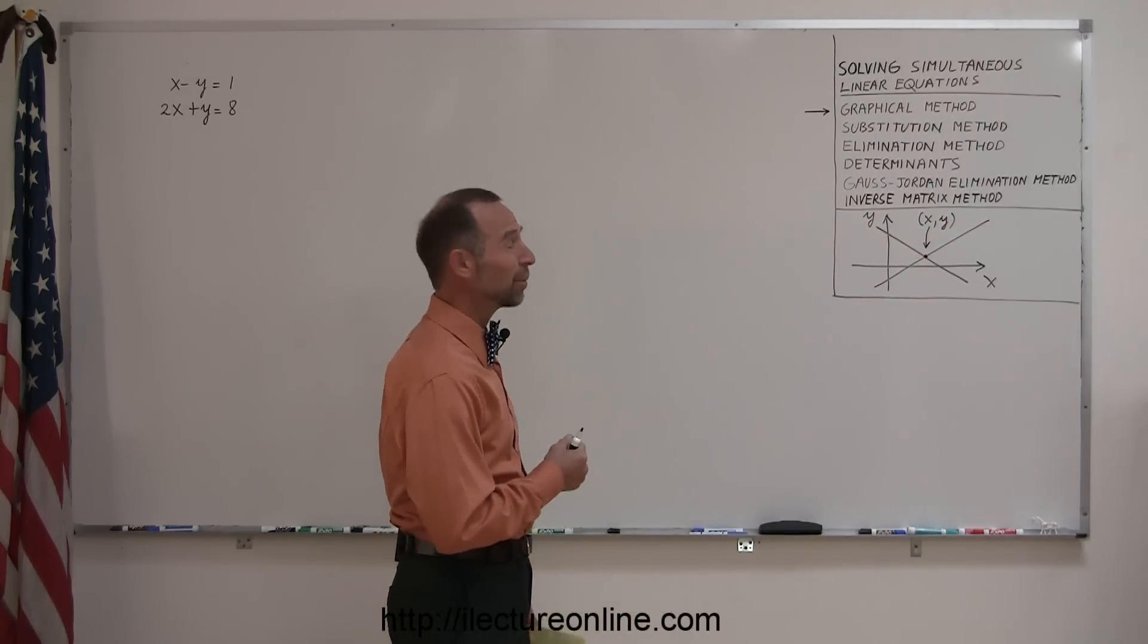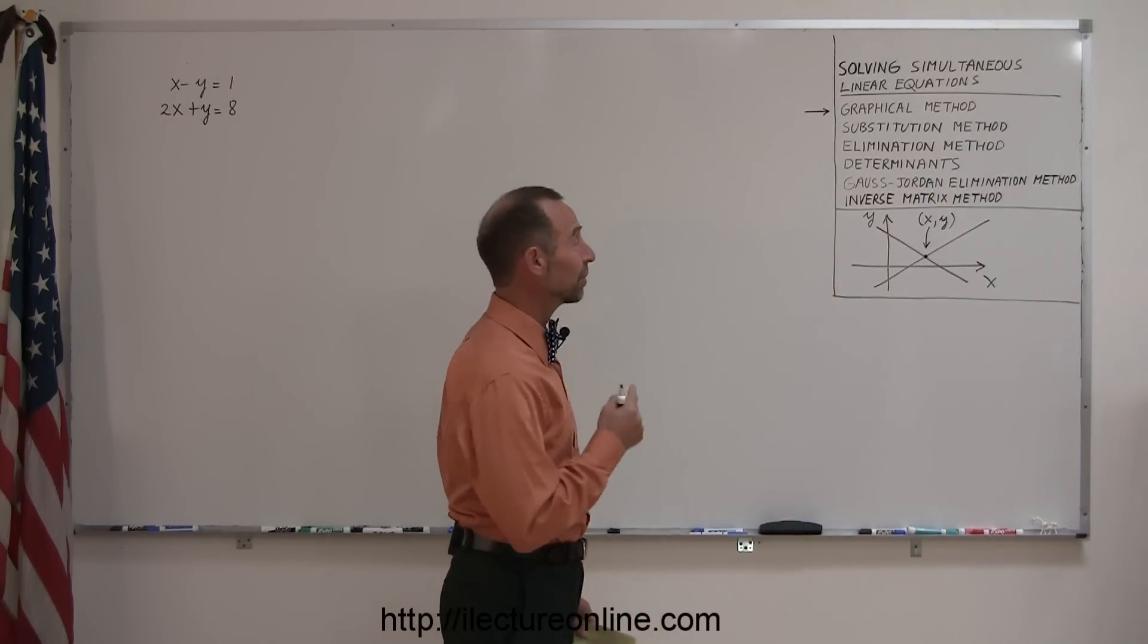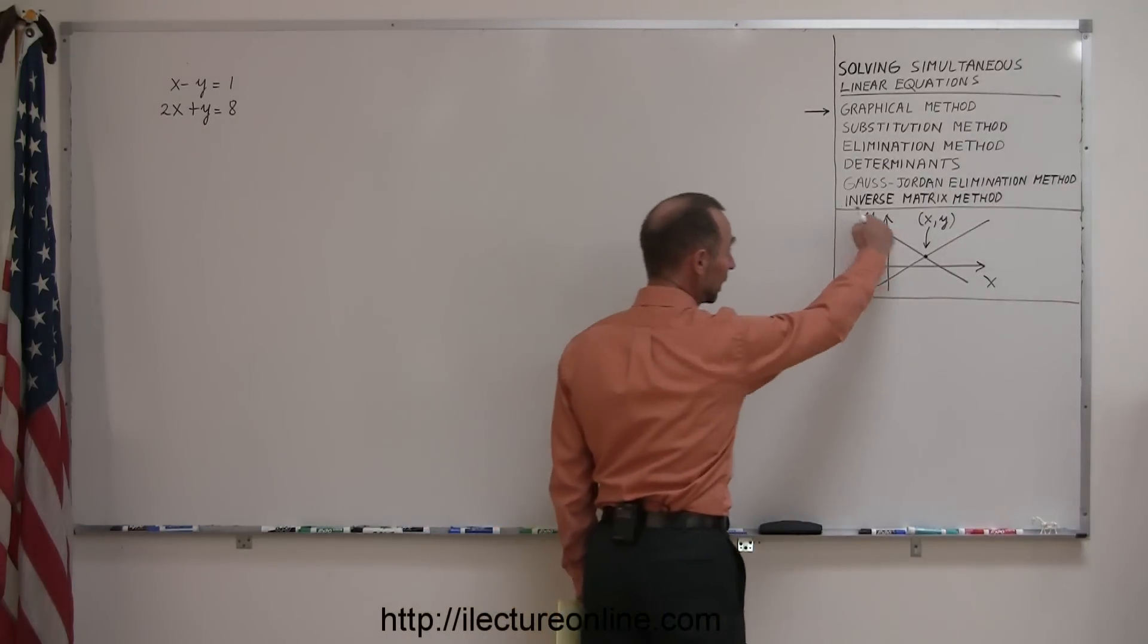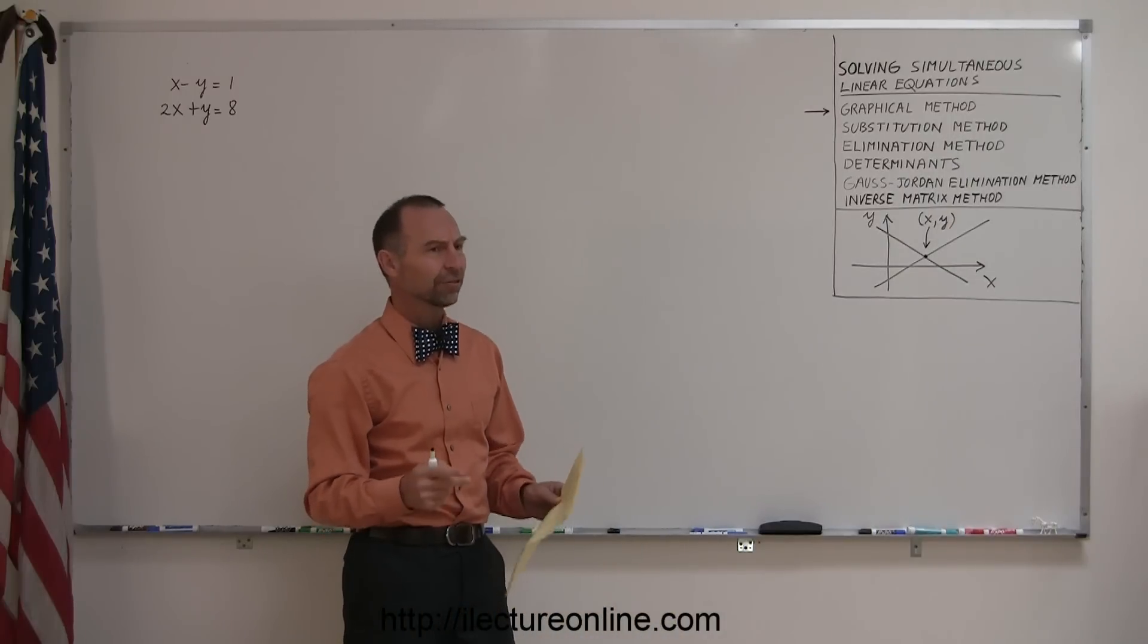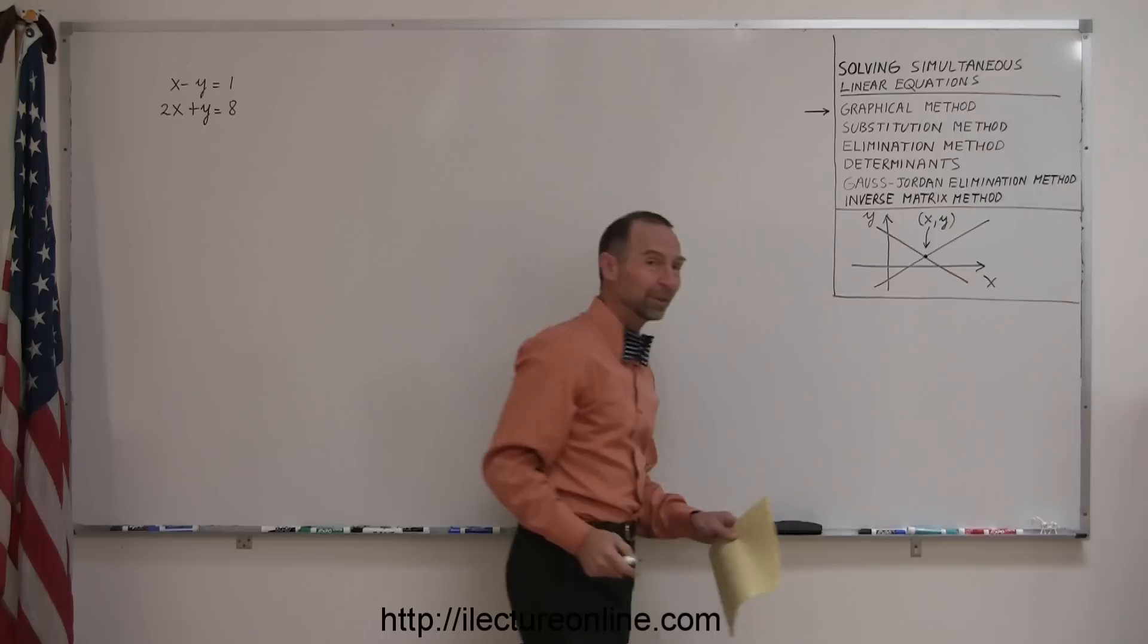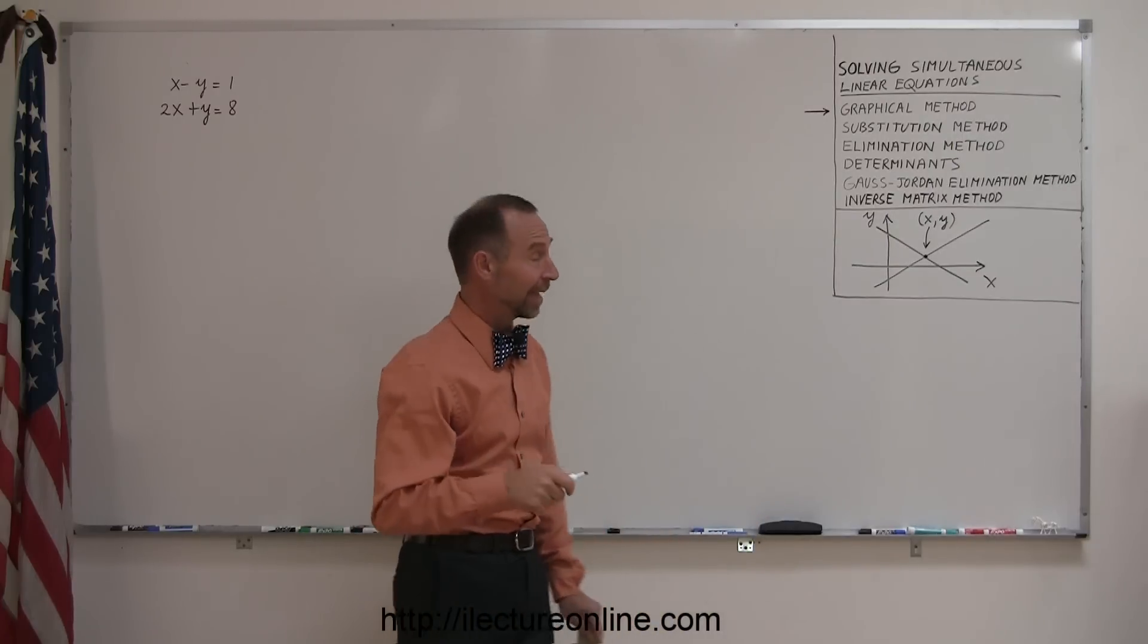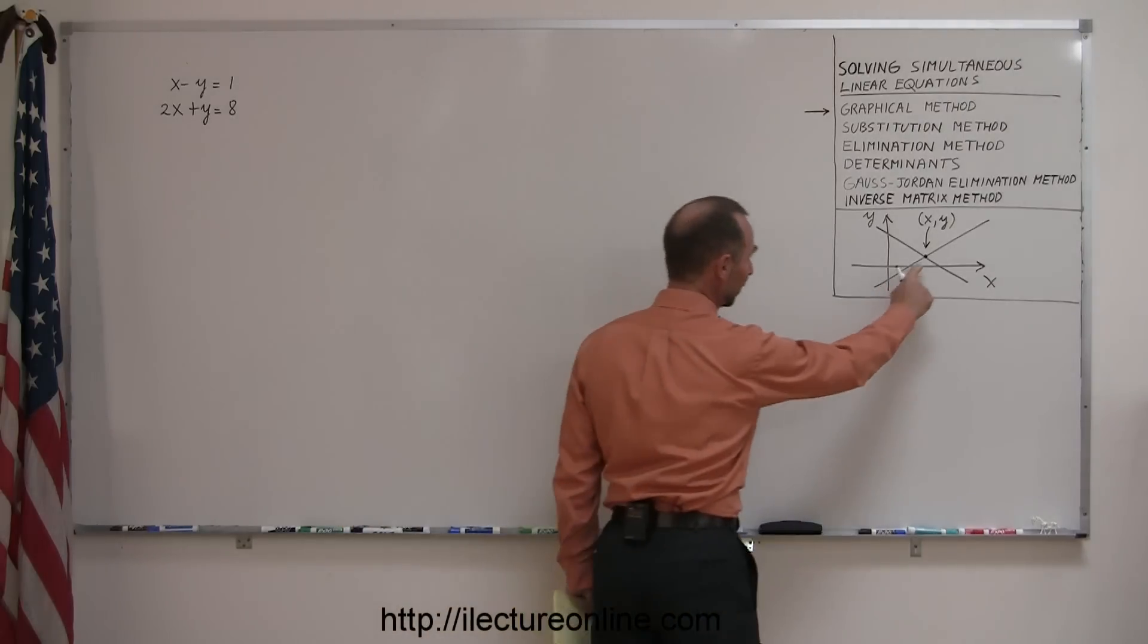Now, what does that really mean when we say we solve linear equations? Well, a linear equation is an equation that can be represented by a line like this. And if you have two of those equations, which have a different slope, then at some point they're going to cross one another. And when they say solve linear equations, what they ask you to do is to find the point, the one point, where the two lines cross.